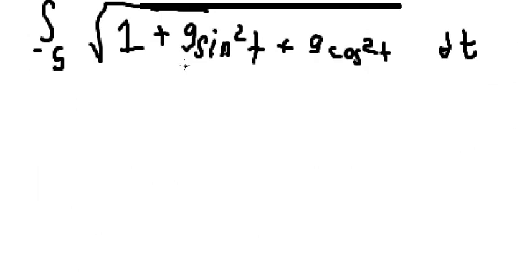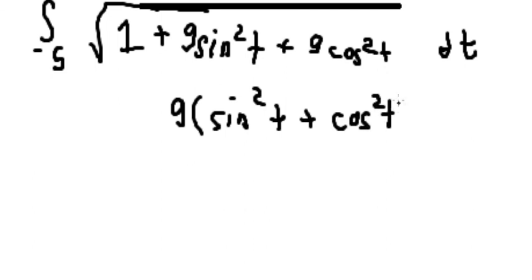So we know that if we do factorization here we got nine times sine t squared plus cosine t squared. We know that this equals one.